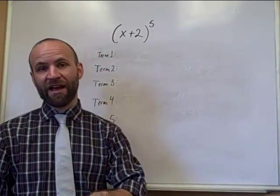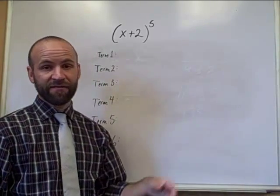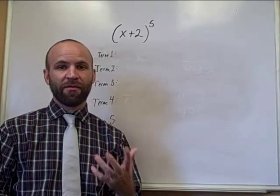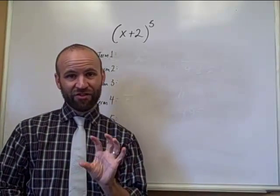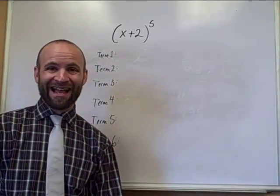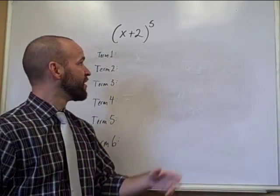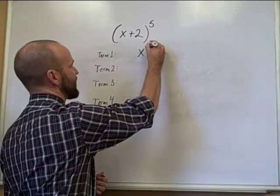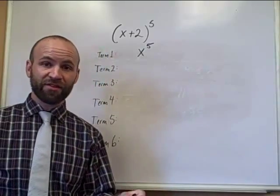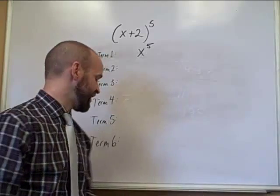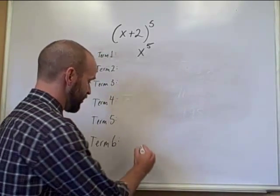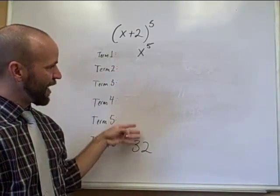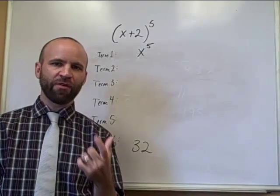We're raising this to the fifth power, so we have a fifth-degree term, fourth degree, third degree, second degree, first degree, and then a constant term — that's why we have six terms total. Just by looking at this, we can determine the first and last terms: the first term is x to the fifth power, and the last term is 2 to the fifth power, which is 32. We only really need to use the theorem for the terms that come in the middle.